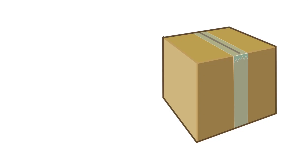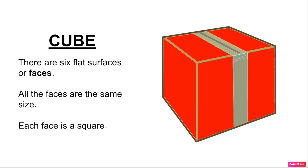So to do that, let's start off by talking about a shape we're all pretty familiar with. And this shape is called a cube. What do you notice when you look at a cube? I see that there are six flat surfaces, or faces. All the faces are the same size, and each face is a square.